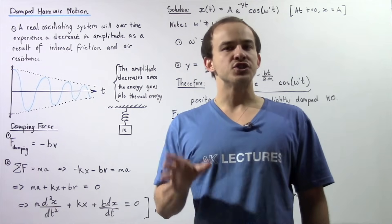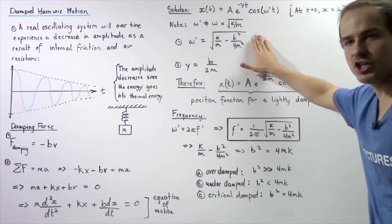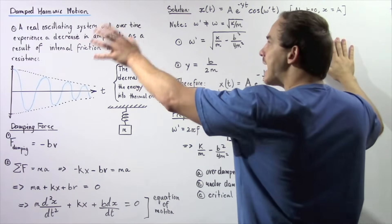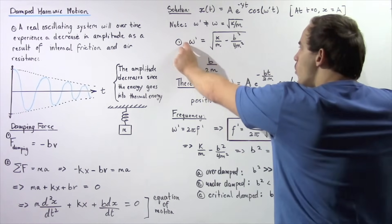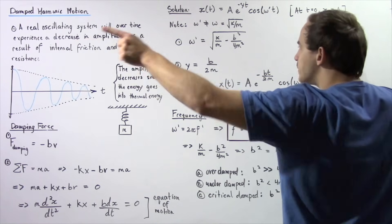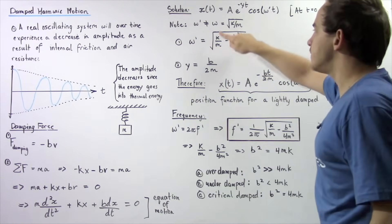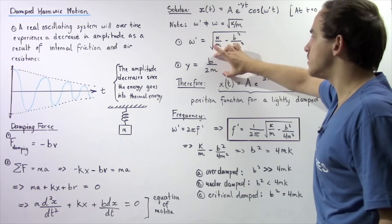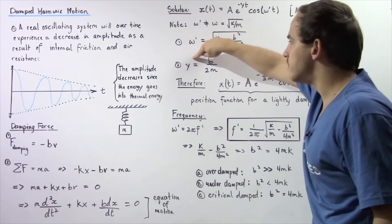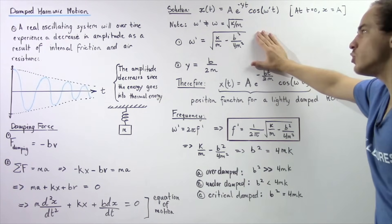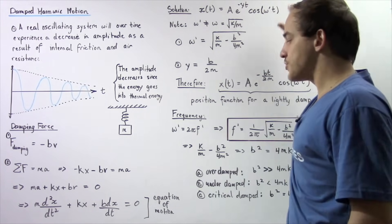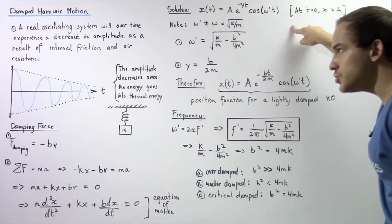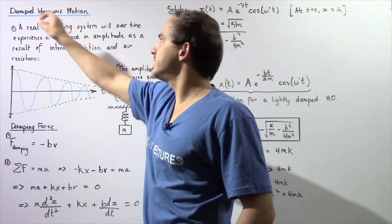Skipping the calculus, we take the first and second derivatives of this solution and plug them into the equation of motion to find the conditions under which the solution works. This general formula is a solution to the equation of motion for objects experiencing damped harmonic motion only if: omega prime equals the square root of k divided by m minus b squared divided by 4m squared, and gamma equals b divided by 2m. If these two conditions hold, then this becomes a valid solution.